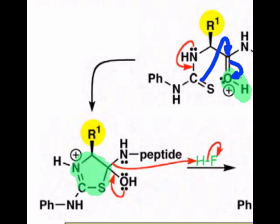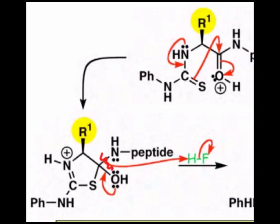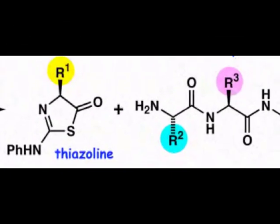General acid-assisted beta elimination then follows, with the hydrofluoric acid assisting in the dissociation of nitrogen from the five-membered ring. After some additional proton transfers, a thiazoline ring containing all the atoms of the N-terminal amino acid results.